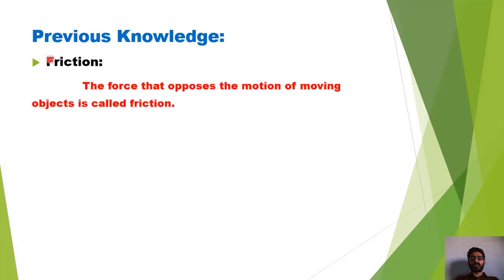Topic شروع کرنے سے پہلے Previous Knowledge کو Recall کر لیتے ہیں۔ سب سے پہلے Friction: The force that opposes the motion of moving objects is called Friction. جب بھی کوئی body کسی surface کی اوپر move کرتی ہے تو اس کی motion کو oppose کرنے کے لیے جو force produce ہوتی ہے اس force کو نام دیتے ہیں Friction کا۔